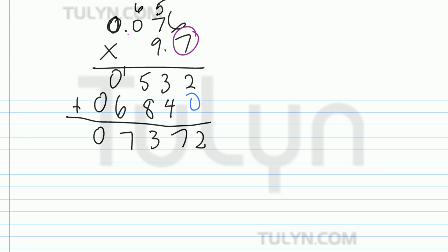1 plus 0 is 1. Counting: 1, 2, 3—that's 3 decimal places here. And 1 decimal place here. The total is four decimal places.